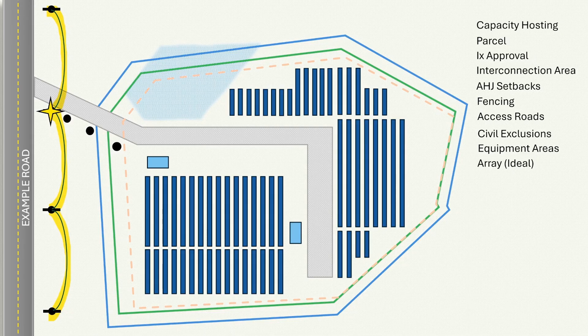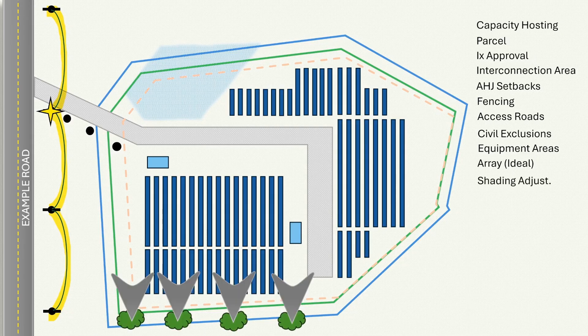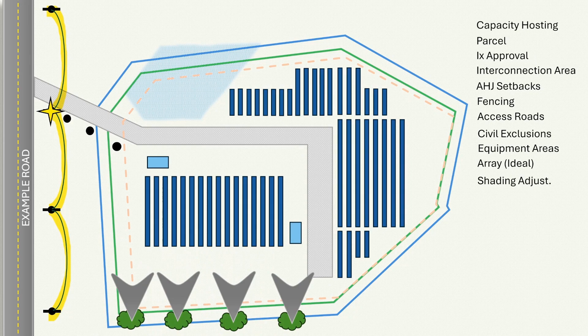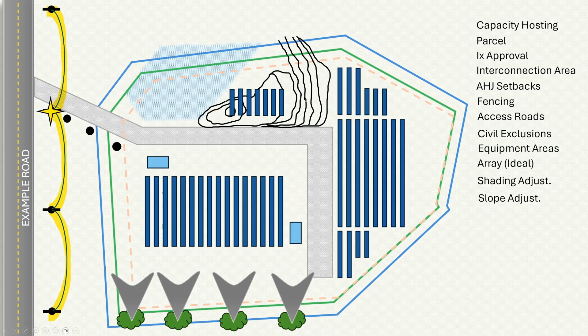One of the things we'll look at is shading. If you have a tree line to the south of your project which can't be cut down, you may need to remove modules in that area. We'll also look at slope adjustments — if you have some steep terrain, it might not be worth it to install modules in that area either.